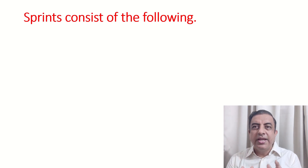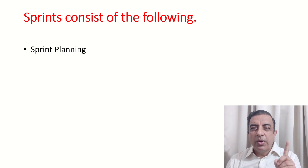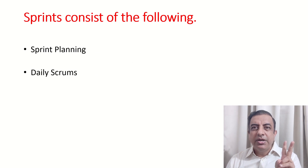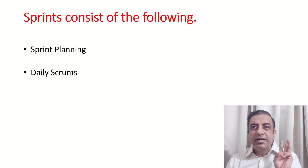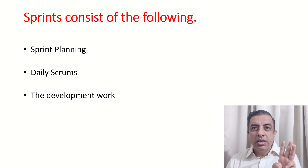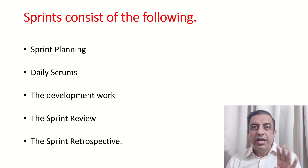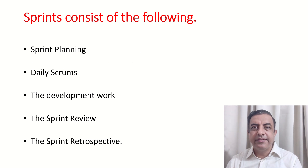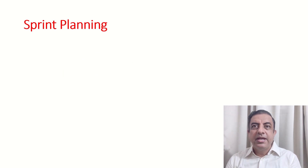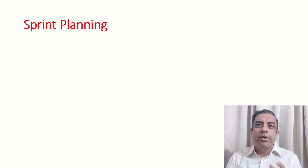In a Sprint, there are following things that have to be done: Number 1 is Sprint Planning. Number 2 is Daily Scrums. Number 3 is the Development Work. Number 4 is the Sprint Review. And Number 5 is the Sprint Retrospective. Let's get into the details of these points.